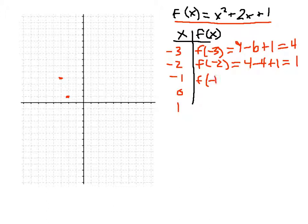And the next point, I will get 1 minus 2 plus 1. And if you see this point, 1 minus 2 plus 1 will result in 0. So that will be (-1, 0).